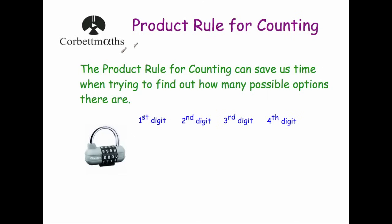In this video we're going to look at the product rule for counting. The product rule for counting is a really useful technique we can use to work out how many possible options there are to different problems. Here we've got a padlock — it's a four-digit combination padlock where you can choose digits between zero and nine. We're going to work out how many different possible combinations there are.